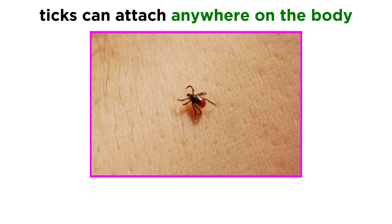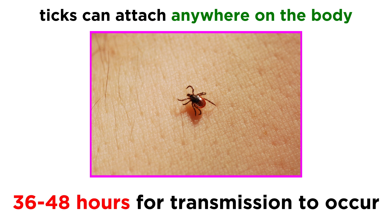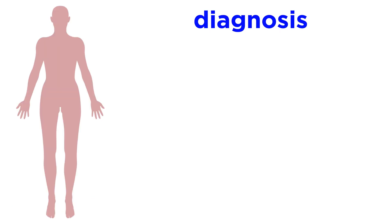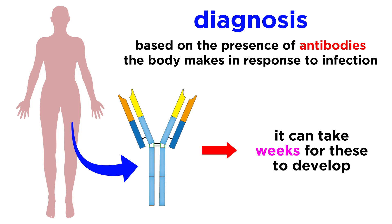Ticks can attach anywhere on the body, especially hard-to-see areas. Most commonly, it's the smaller, more immature versions of ticks, called nymphs, that infect humans because they're more difficult to see. It typically takes 36 to 48 hours of attachment for the Lyme disease bacterium to be transmitted. To diagnose Lyme disease, doctors test for certain antibodies that the body makes in response to infection. However, it can take several weeks, or even longer, for antibodies to develop, which can lead to a negative test result even if a patient has been bitten by an infected tick.